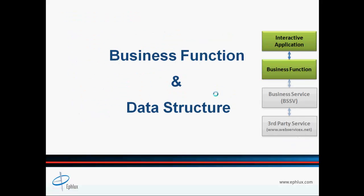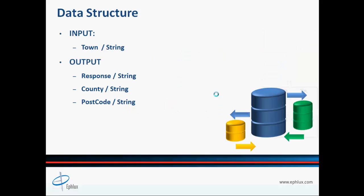In this part we will concentrate on creating our data structure for the business function, whereas in Part 2 we will continue with our business function. As outlined earlier, we need one input parameter — the town name as a string in our data structure — along with three output parameters for response, county name, and postcode. You'll be receiving county name and postcode information from the external service provider, whereas we will formulate the response parameter ourselves based on the successful or unsuccessful execution.